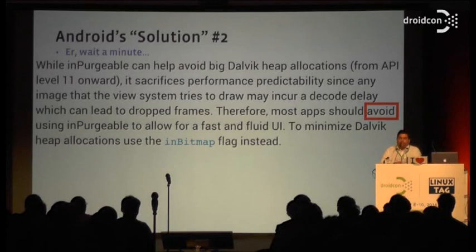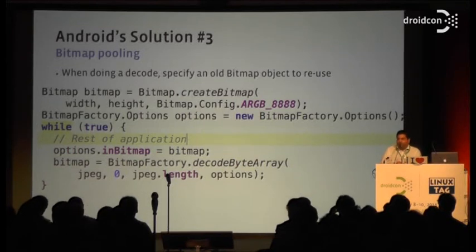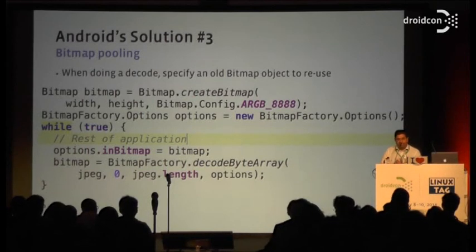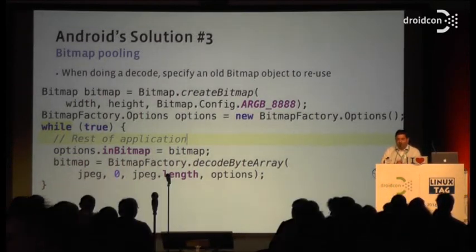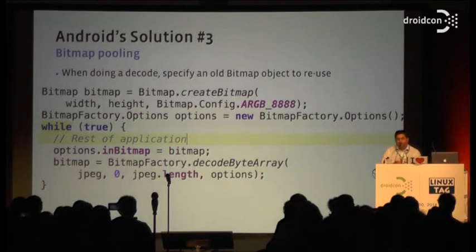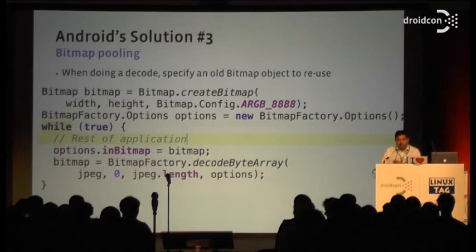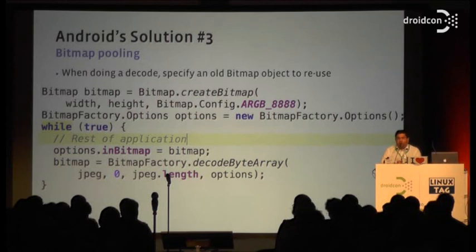They said you should use the inBitmap flag instead. So what is the inBitmap flag? Instead of inPurgeable, you specify an existing bitmap object. When you want to show something else, you take the same block of memory and decode into that. This way you can allocate just as many bitmaps as you need and reuse them over and over again. It's almost the same thing as inPurgeable, except you can control when the decode happens so it doesn't tie up the UI thread. It sounds like a perfect solution. If you look at the Picasso library from Square, that uses this solution. Facebook really, really wanted to use it. And then we decided not to.